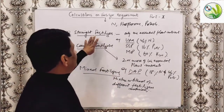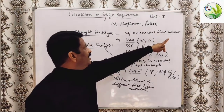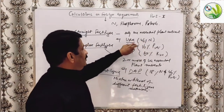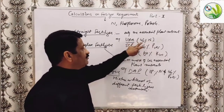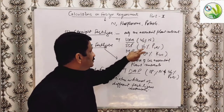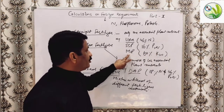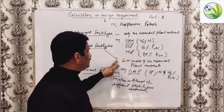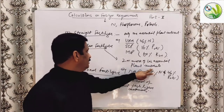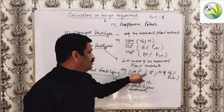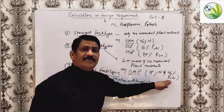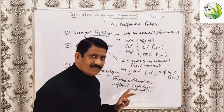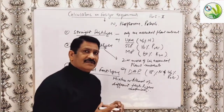To recap: straight fertilizers supply only one essential plant nutrient — for example, urea supplies only nitrogen at 46%, single superphosphate supplies 16% phosphorus as P₂O₅, and muriate of potash contains 60% K₂O. Complex fertilizers supply two or more nutrients — DAP supplies 18% nitrogen and 46% P₂O₅. Mixed fertilizers have no definite chemical formula; they are simply a mixture or blend of different fertilizer materials.